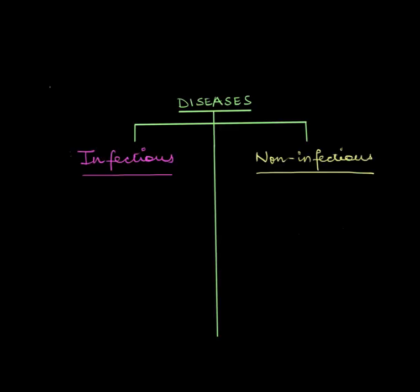Infectious diseases are the ones that spread from one person to another. Meanwhile, non-infectious diseases are the ones that don't. But why is that? Why do some diseases spread while others don't?